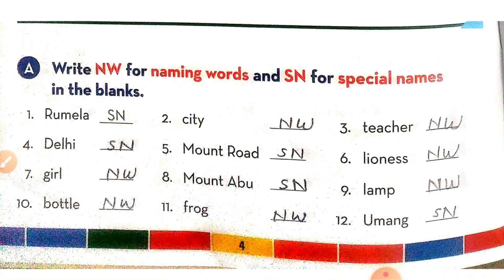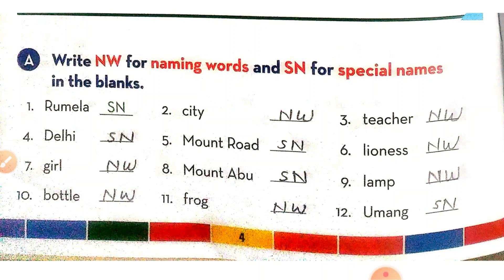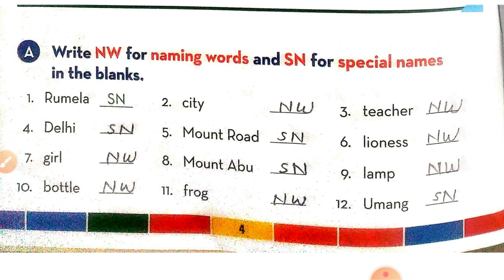Now see the textual exercise. Write NW for naming words and SN for special names in the blanks. The first word is 'Rumela' — Rumela is a name of a person, so it's a special noun; SN is written here. Second is 'city' — city is a naming word, meaning it's a common noun. 'Teacher' — teacher is a naming word.